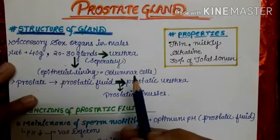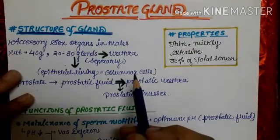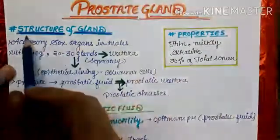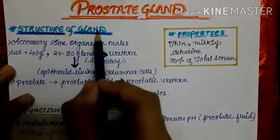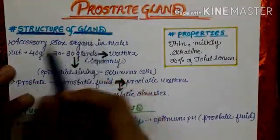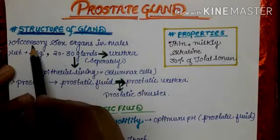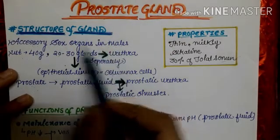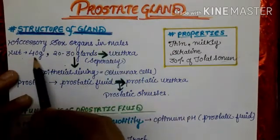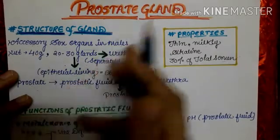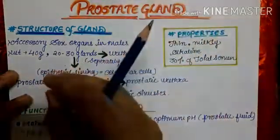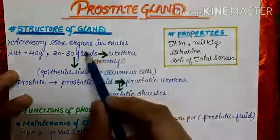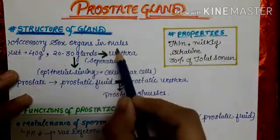Hello everyone. The topic I am going to cover today is the prostate gland. First, we will study the structure of the prostate gland. The prostate gland is an accessory sex organ present in males. Its weight is 40 grams. The prostate gland consists of 20-30 separate glands present around the urethra.